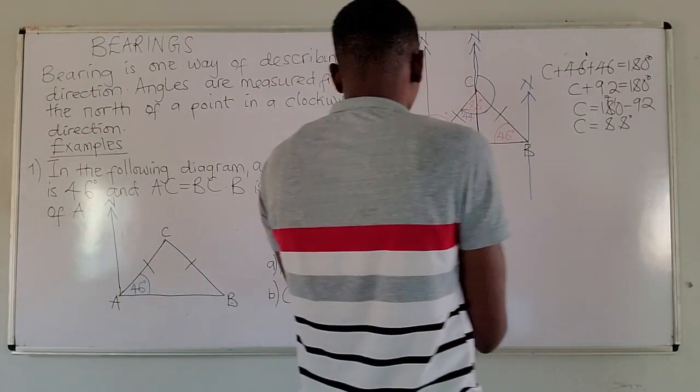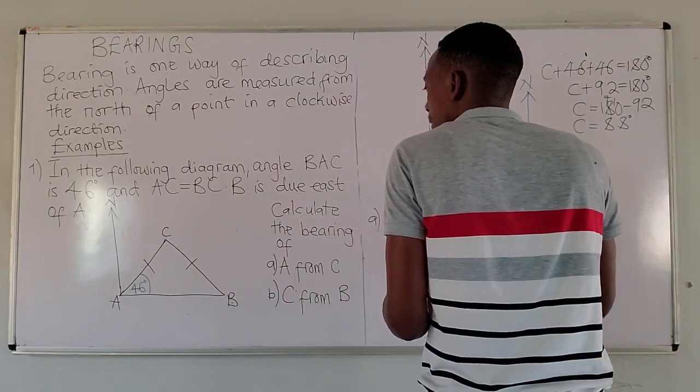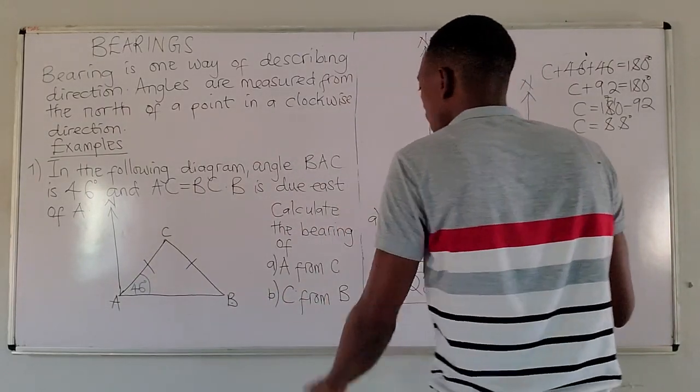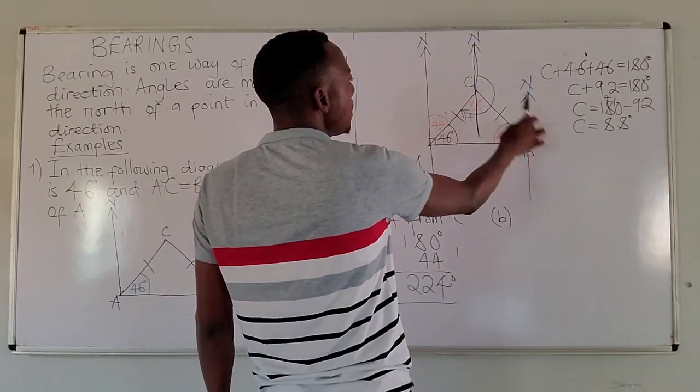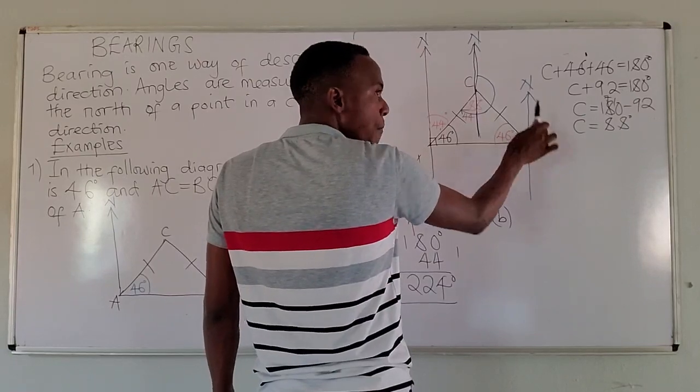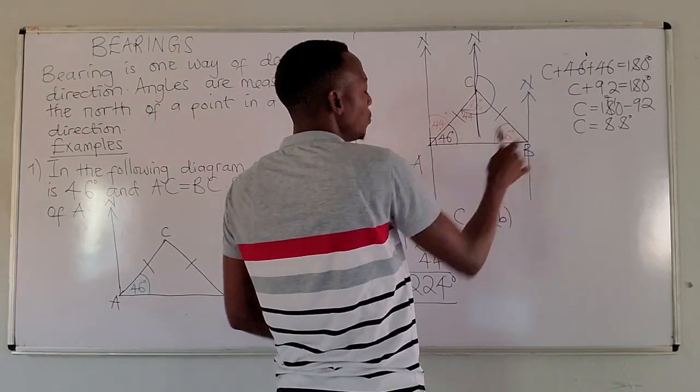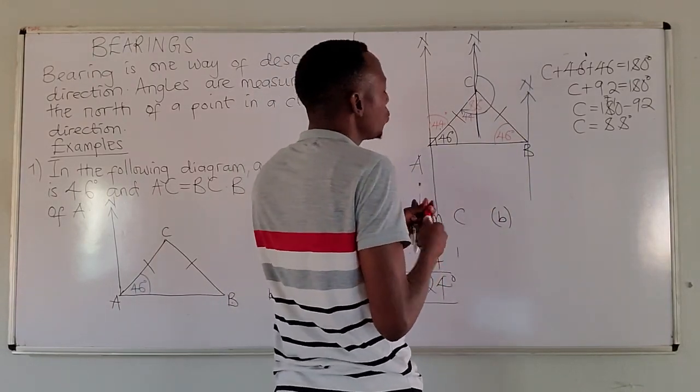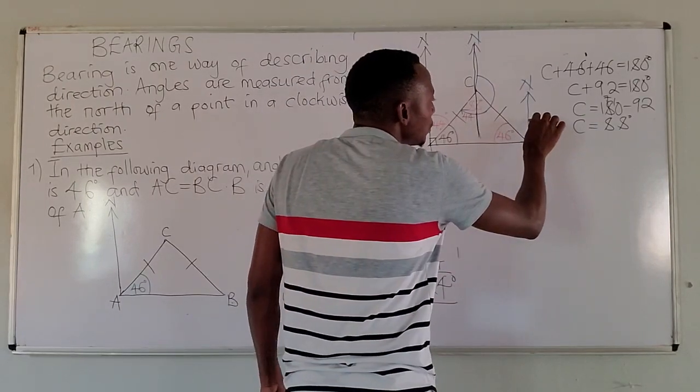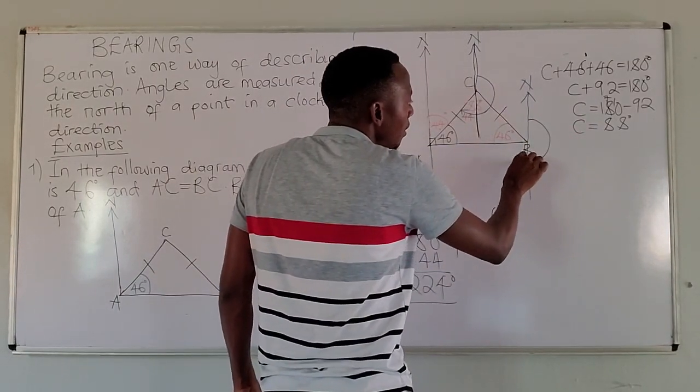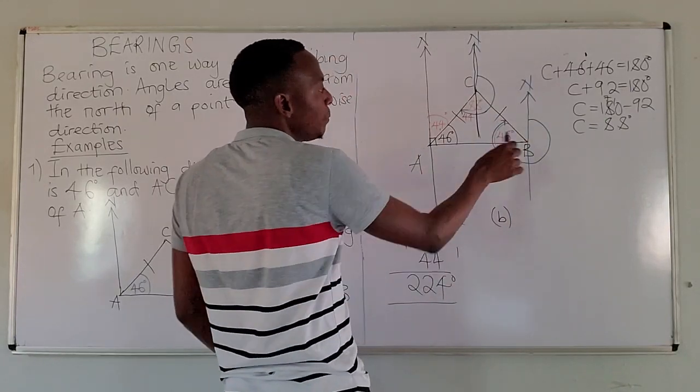Then the bearing of C from B. From B - that's what it does for 'from'. From B, you jump to point B. So now we are going to measure from the north of B, moving in a clockwise direction, until we hit the line joining B and C.